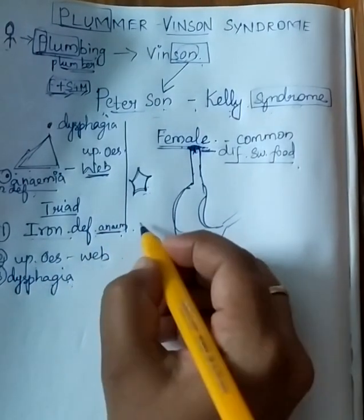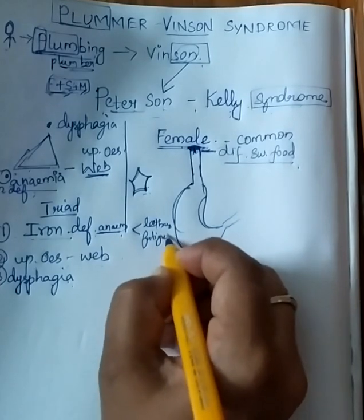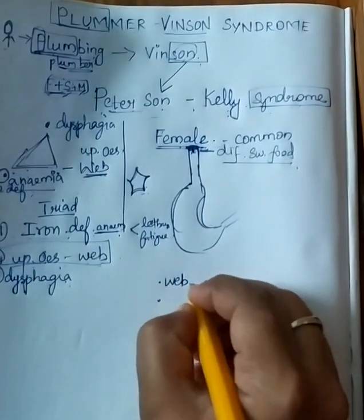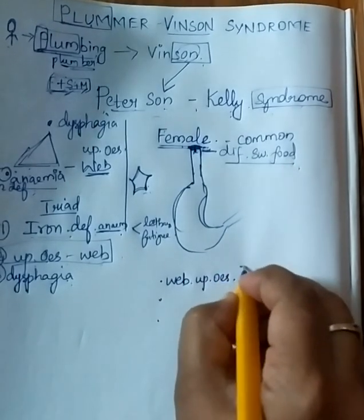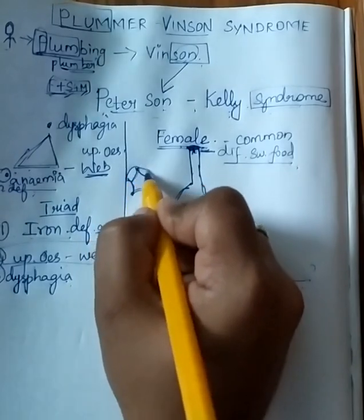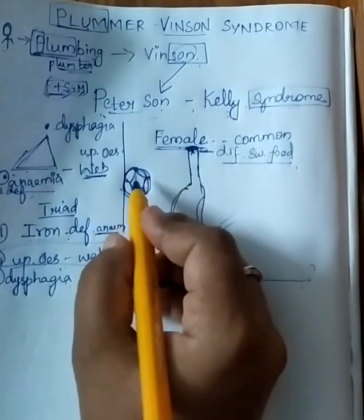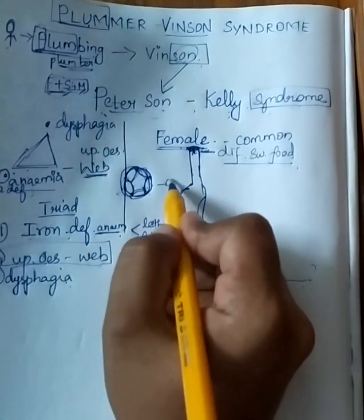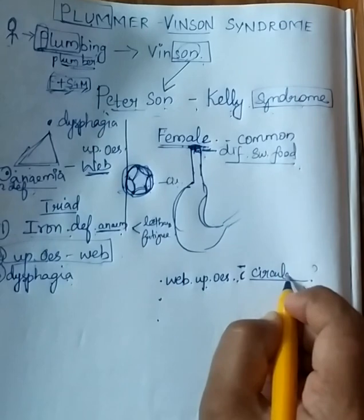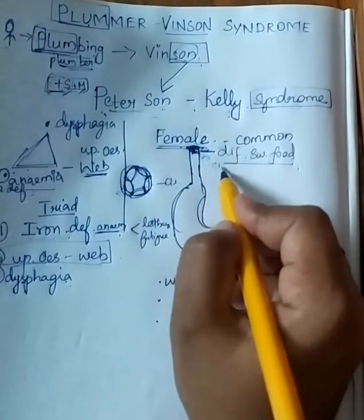There are a few more points. With anemia there would be common symptoms like lethargy and fatigue. And regarding the upper esophageal web — if you take the house web shape and join all its edges, you get a circle. So this web in the upper esophageal portion consists of circular muscle fibers.